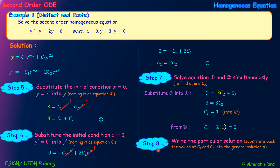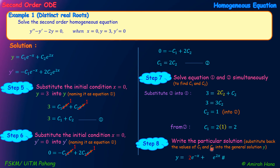Step 8: write the particular solution by substituting C1 equals 2 and C2 equals 1 back into the general solution Y equals C1 E to the power of negative X plus C2 E to the power of 2X. The particular solution is Y equals 2E to the power of negative X plus E to the power of 2X. This is the final answer, free from derivative symbols.